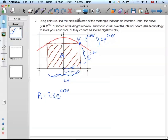If I'm going to find a maximum area, I have to find the derivative. I'm going to take the derivative of A with respect to x. There's a product here, so we'll use product rule. Take the derivative of the first times the second,